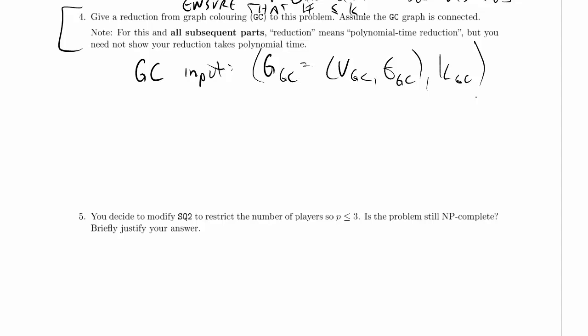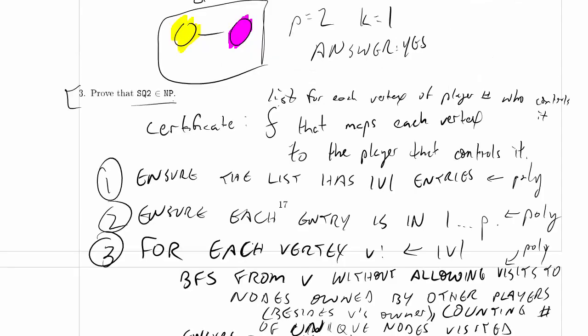We also get a maximum empire size, connected empire size, which we don't have in graph coloring, right? And in fact, what does that maximum connected empire size mean in graph coloring terms? Like if k is equal to two, is this just like graph coloring?